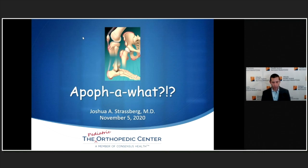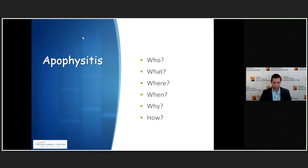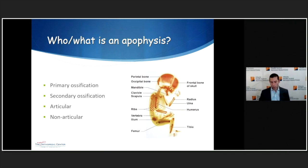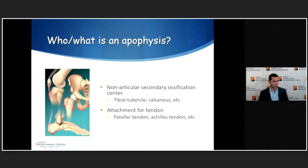I'm Josh Strasberg, and I'm going to talk about apophysitis. First, what is an apophysis? You have a primary ossification center and a secondary ossification center. In the femur, the primary ossification center is the shaft, and at the ends of the bone you have secondary ossification centers — articular ones, which are the joints, and non-articular ones like the tibial tubercle or calcaneus, which are attachment areas for tendons such as the patellar tendon and the Achilles tendon.